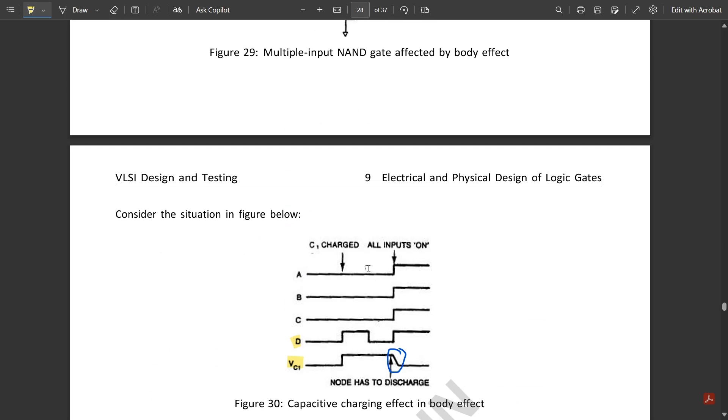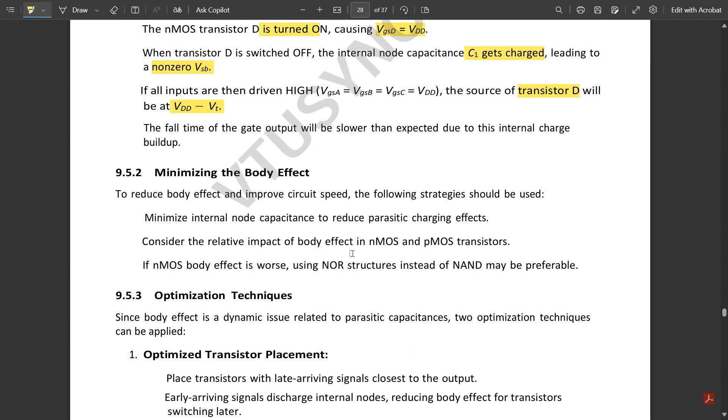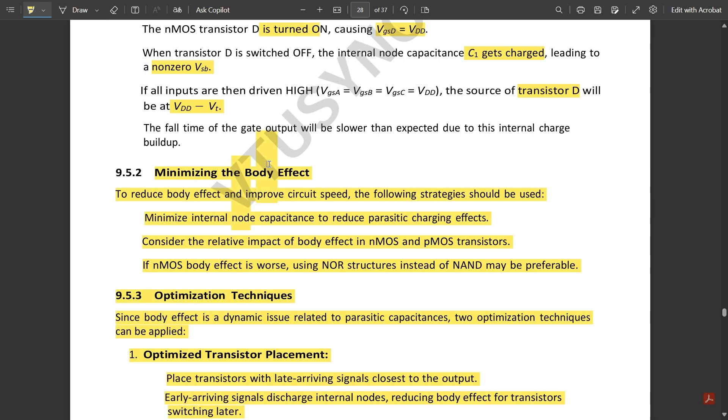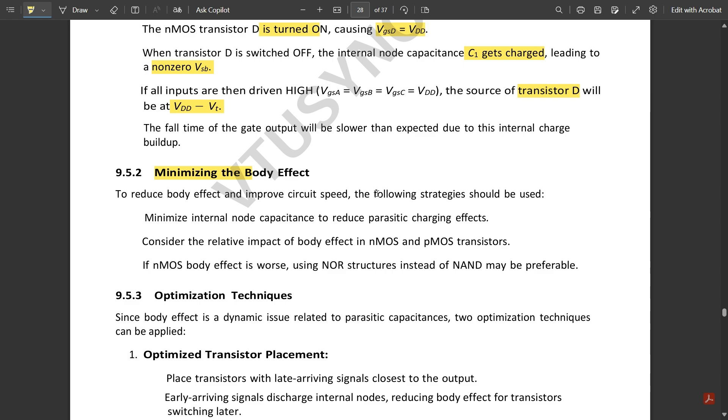This is the body effect problem. Now how to minimize this body effect: first, minimize the internal node capacitance to reduce parasitic charging effects. Second, consider the relative impact of body effect in nMOS and pMOS transistors.